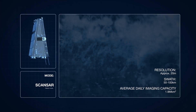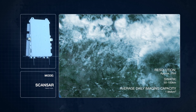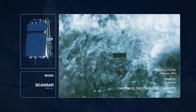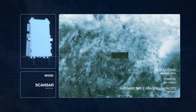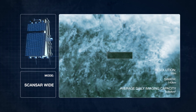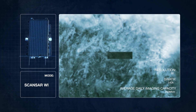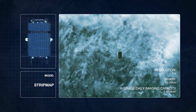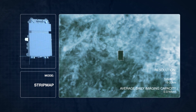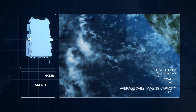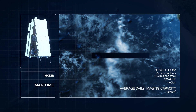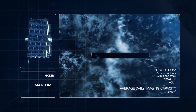ScanSar is Novosar's default mode, offering a medium resolution of approximately 20 meters and a swath of 50 to 100 kilometers. We also offer a slightly wider ScanSar wide mode. Our highest resolution mode is the strip map mode, which offers six meters of resolution and a narrower swath. Finally, we offer the maritime extremely wide swath mode — up to 400 kilometers over open ocean — for ship detection.